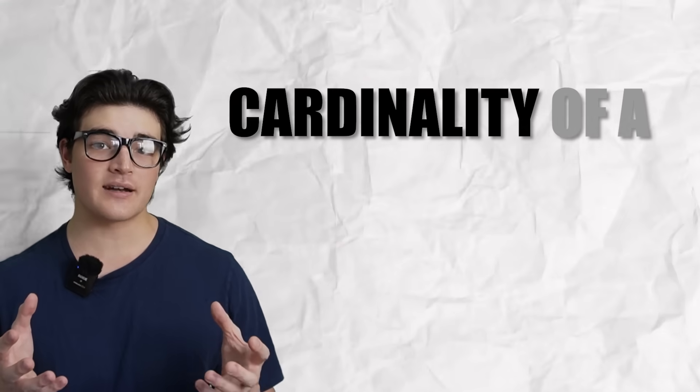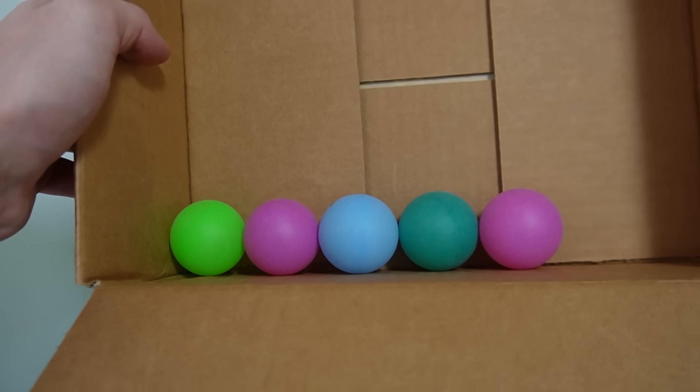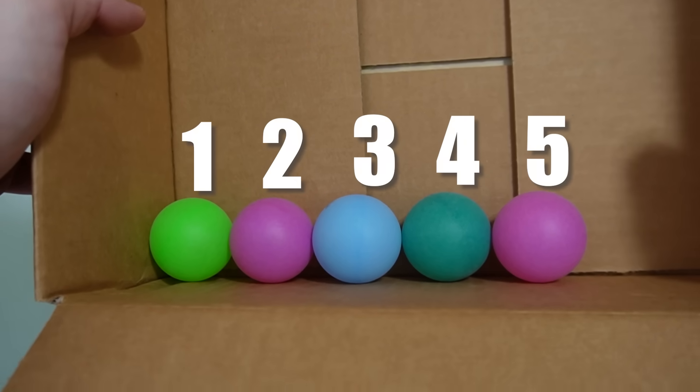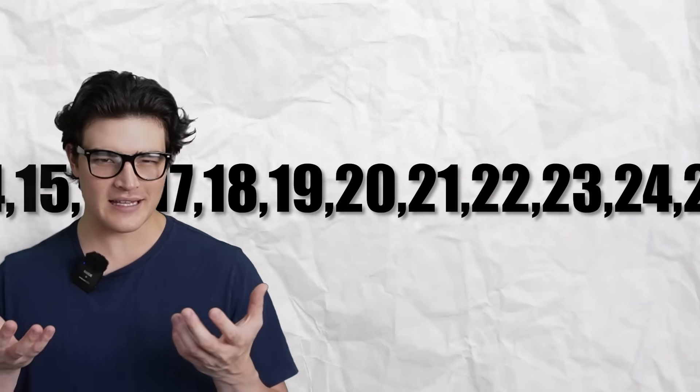Well, when we consider the size of a set, we generally talk about its cardinality, which is roughly the number of individual objects in it. For example, this box contains 5 ping pong balls. I can count 1, 2, 3, 4, and 5. But when we have a set of infinite size, we can't just count the number of elements in it, because there are infinitely many. So how do we go about sizing this matter?